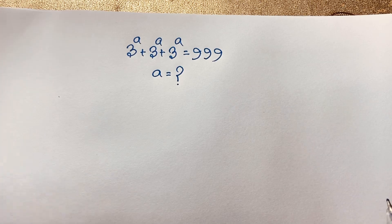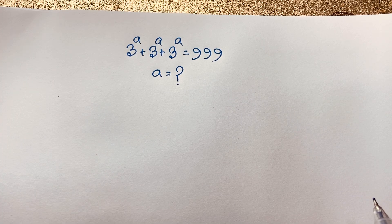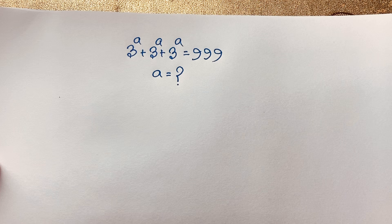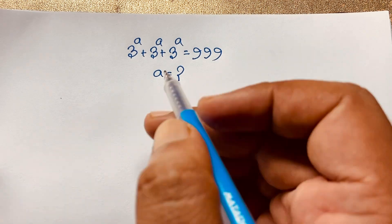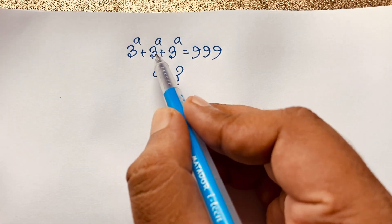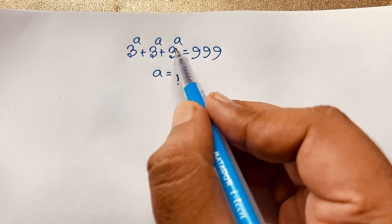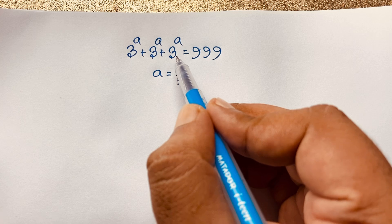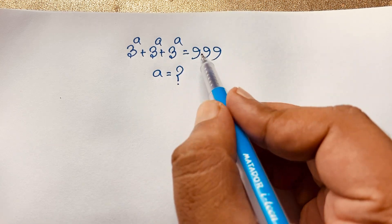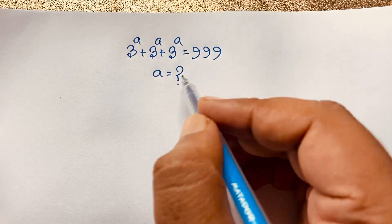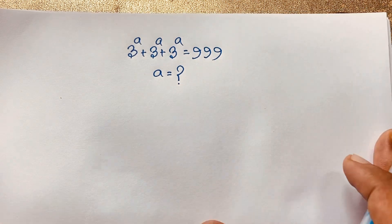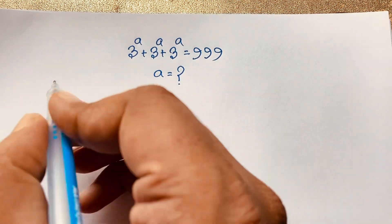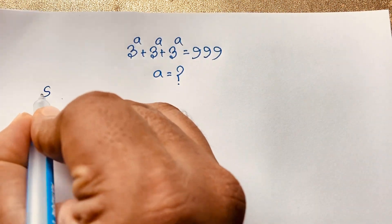Hello everyone, welcome to Russia's classroom. Today we are solving an interesting viral exponential math question, which is 3 to the power a plus 3 to the power a plus 3 to the power a is equal to 999. How to solve this interesting easy math problem? So our math solution.